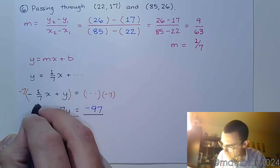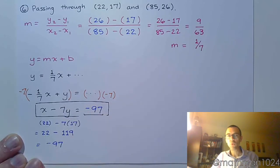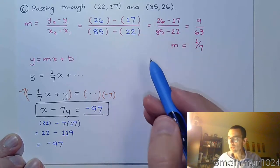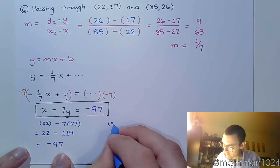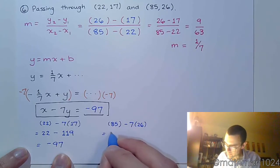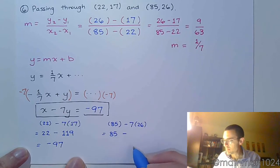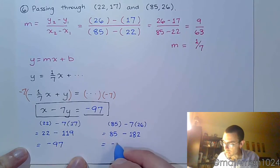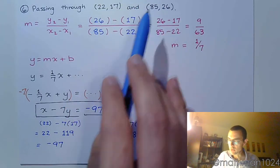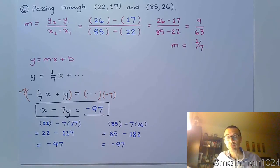Now, it should be easy enough for you to check this by going to this other ordered pair. Right? So, if I had used 85 and 26 instead. So, that would have been 85 minus 7 times 26. That's 85 minus, so if I do the math, it's going to be 182. And we do the subtraction, and we also get negative 97. So, we should feel really good about ourselves. So, we have an equation that not only looks good, but we've verified that both of these ordered pairs, when you plug them in, it gives you negative 97. So, we're good.